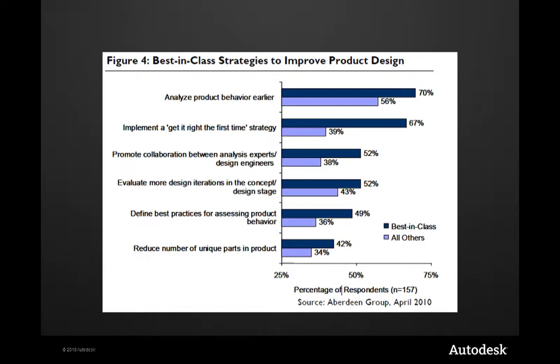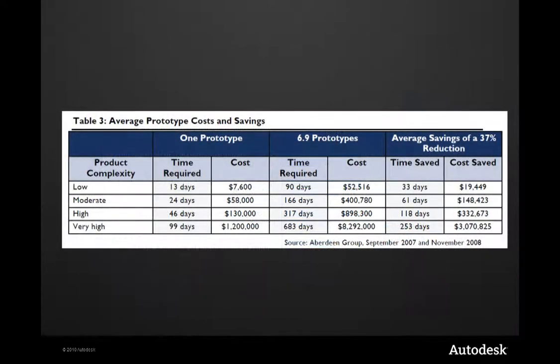The biggest driver to improve the design process is reducing cost. Remember that much of the final cost of a product is determined by the decisions engineering makes during the design phase. 73% of best-in-class manufacturers use digital prototypes in their design process to predict product performance. Analyzing the product's behavior earlier with simulation is how you know you're making the best decisions, way before you need to build physical prototypes. Building and testing too many physical prototypes can adversely impact time to market and cost. A recent Aberdeen report found that the industry average is 6.9 prototypes per design. So think about this: how many prototypes do you build? When in the design process are the prototypes constructed and tested? And how much can you change the design based on the results of those prototypes?